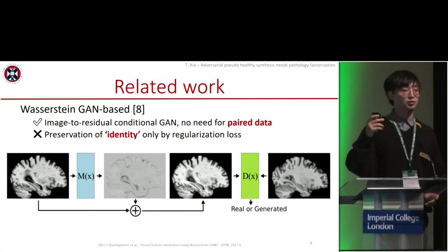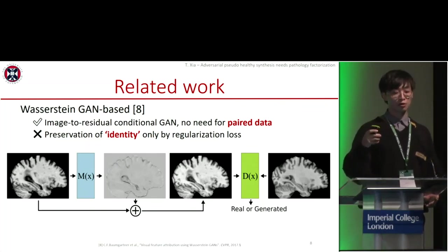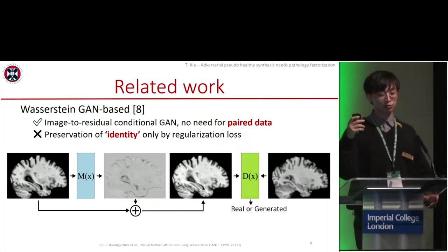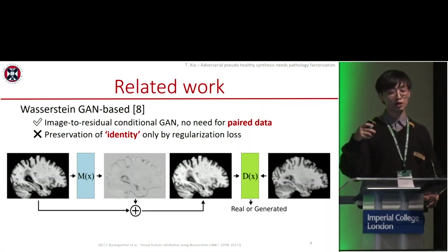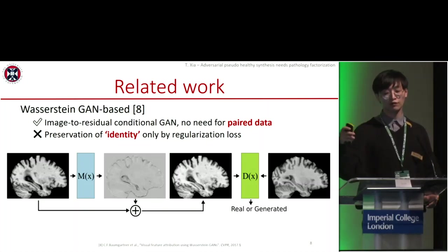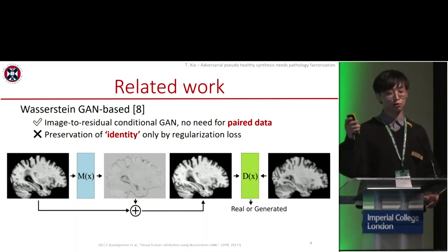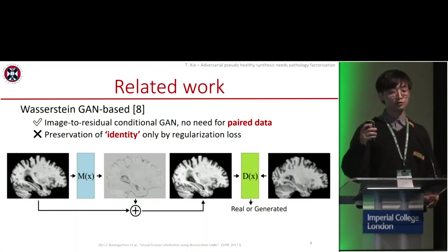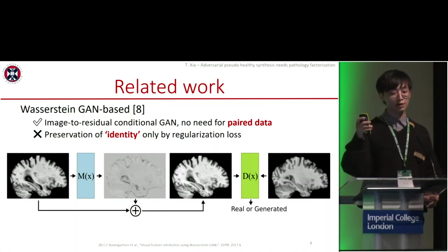Another work from the same group at ETH proposes an image-to-residual conditional GAN, where they first generate residual images from a pathological image, and add this residual to the input to get pseudo-healthy images. They also have a discriminator to tell apart fake and real data to train the network. However, they only preserve identity by regularization loss on the residual map, which might not be enough in reality.